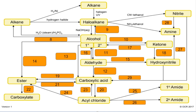Number seven: haloalkane to amine — react it with ammonia in the presence of ethanol. Number eight: alcohol to alkene — react the alcohol with phosphoric acid or sulfuric acid and you need to heat it. Number nine: alcohol to haloalkane — react the alcohol with a sodium halide and you need sulfuric acid.